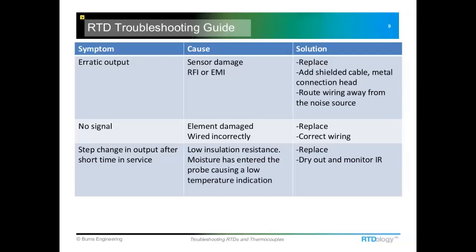How do you fix that? The probe can be dried out — take it out, put it in an oven. Vacuum ovens work a little faster; a couple hundred degrees Fahrenheit for maybe a day or two will dry it out. But you do have to ask how the moisture got in in the first place — maybe that epoxy seal has been compromised. It's a toss-up whether you try to dry the probe out and monitor the insulation resistance going forward, or just replace the probe.